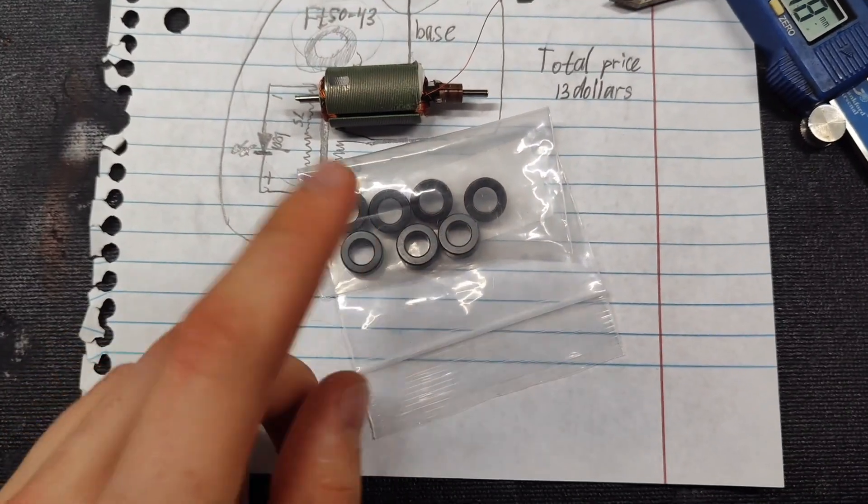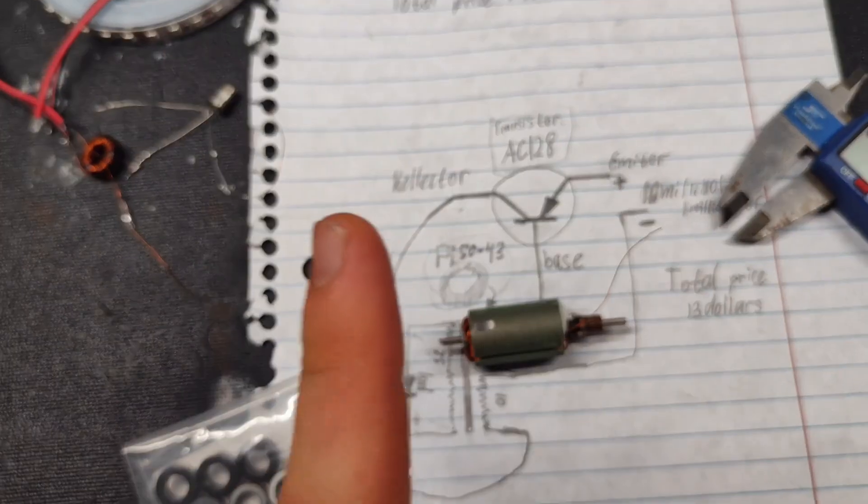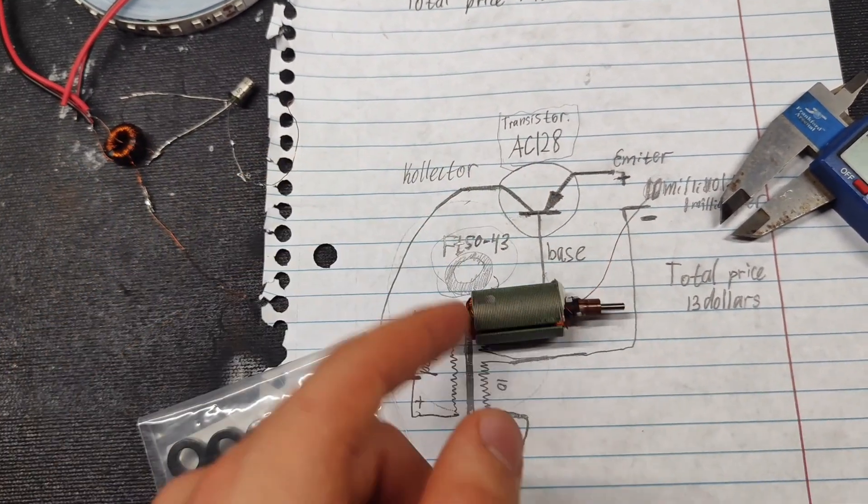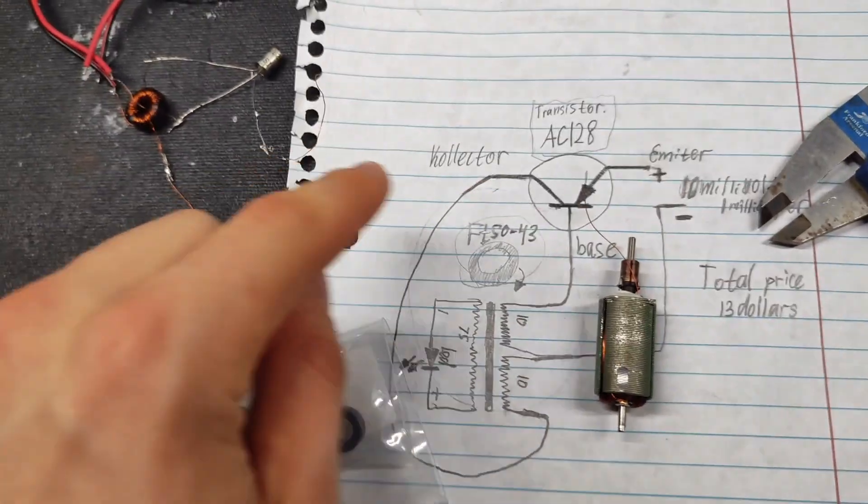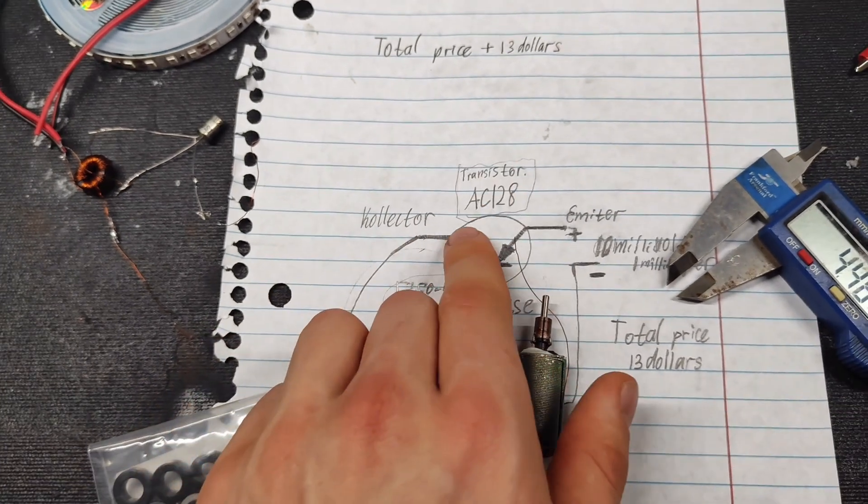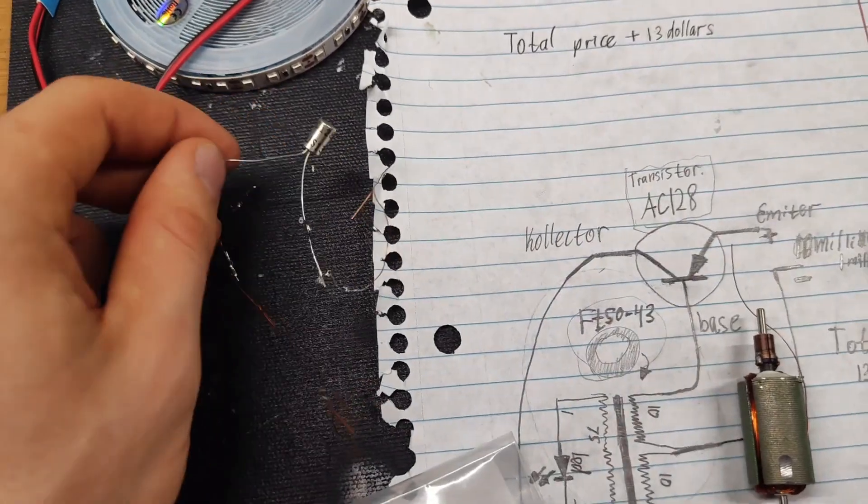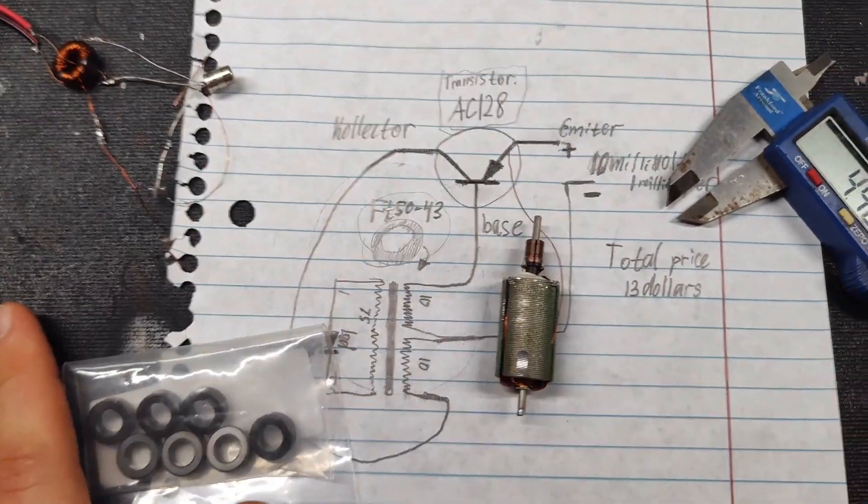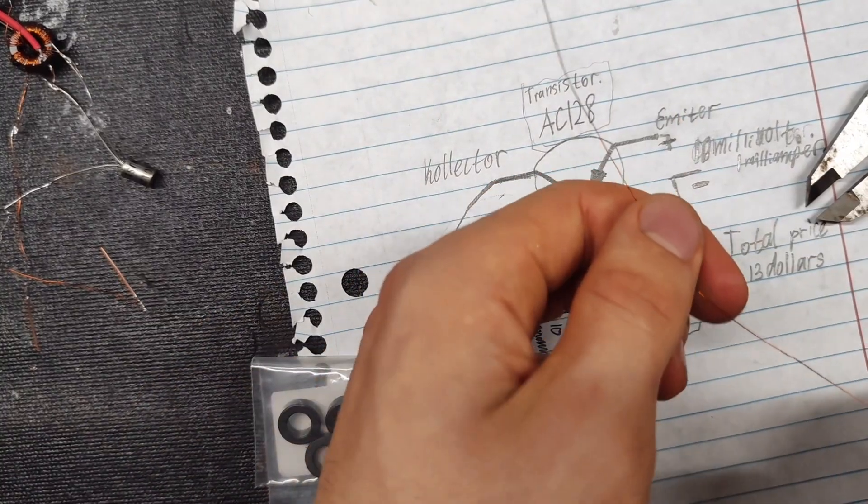I also use one thread. The very important detail in my energy converter is this transistor, the 2N5128. Now I'll start connecting. I take wires from the rotor.